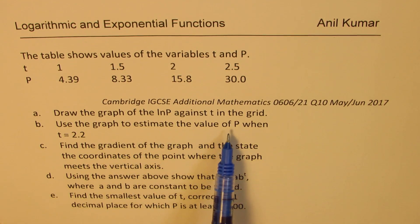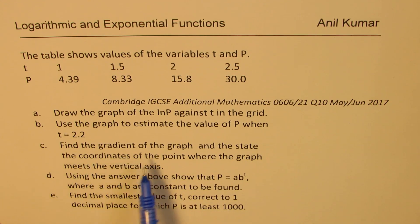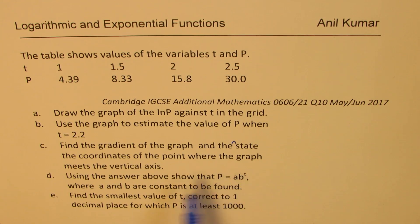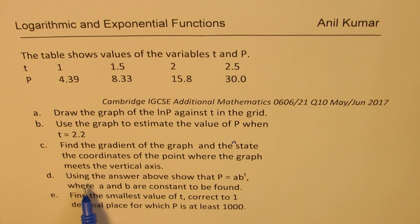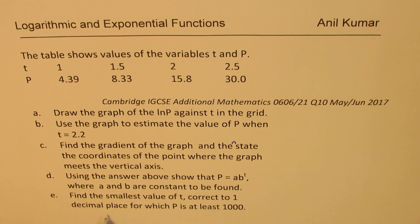Part B: use the graph to estimate the value of P when T equals 2.2. Part C: find the gradient of the graph and then state the coordinates of the point where the graph meets the vertical axis. Part D: show that P equals AB to the power of T, an exponential function, where A and B are constants to be found. Part E: find the smallest value of T correct to one decimal place for which P is at least 1000.